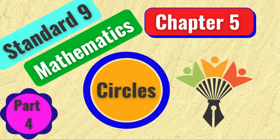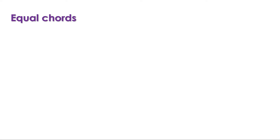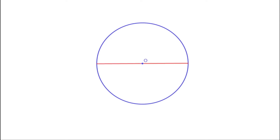Welcome to Maths Companion. In the last video we discussed the questions on page 69. Today, let us discuss the next section: equal chords. Let us draw a circle and its diameter. When we join any two points on a circle, we get a chord.